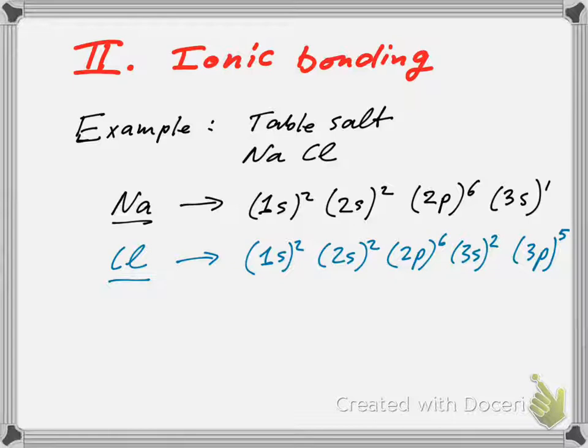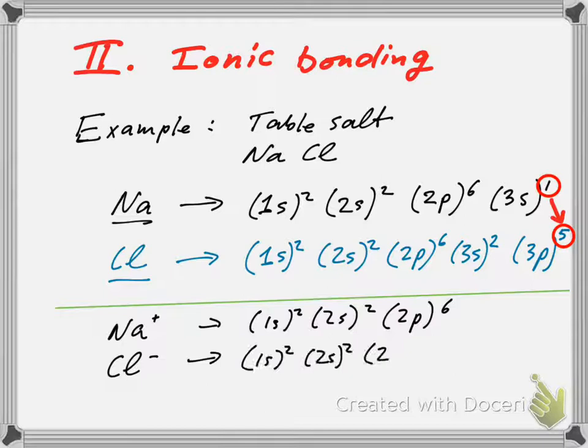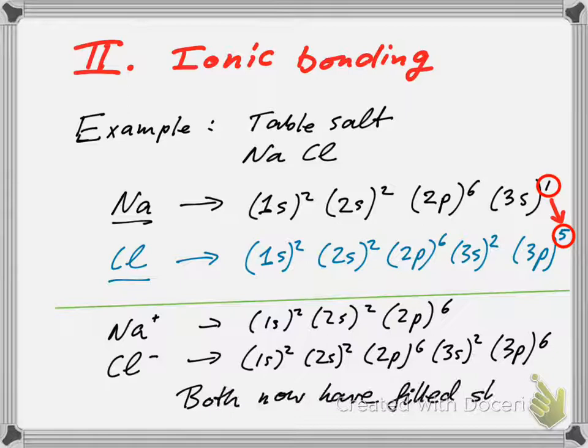The chlorine, on the other hand, has this electronic configuration where we have filled the first and second shells, and the third shell is almost filled. There's only one electron missing in the 3p orbitals. So what we could do is transfer that electron over, so then the sodium would be positively ionized.